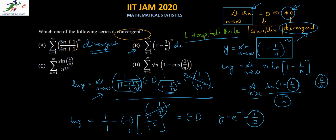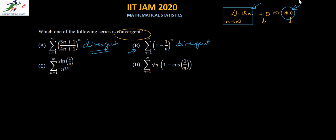Since the limit is 1/e ≠ 0, the second series is also divergent. We now come to the third series: sin(1/n) / n^(1/n).